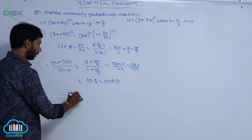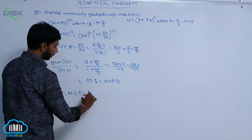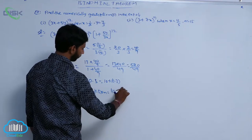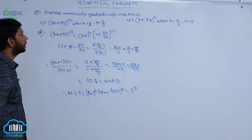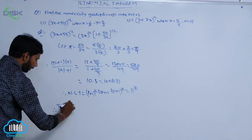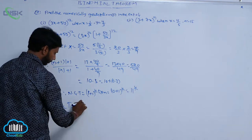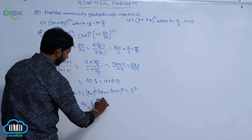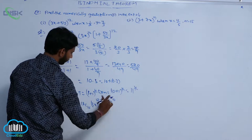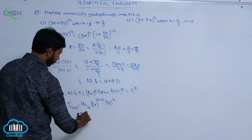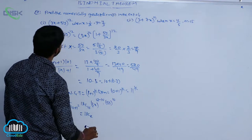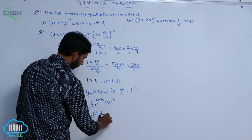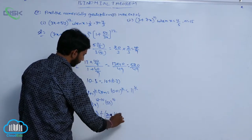Therefore, the numerically greatest term is the (p+1)th term, where p = 10, so it is the 11th term. Find T11, written as T(10+1). Using T(R+1) = 12C10 × (3x)^(12−10) × (5y)^10, with x = 1/2: this becomes 12C2 × (3/2)^2 × (20/3)^10.